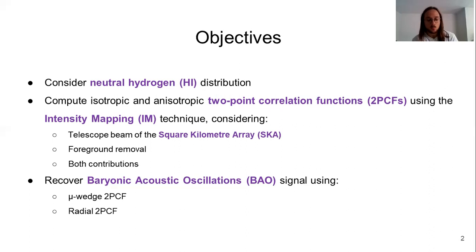And finally, the intensity mapping technique will be used in one of the surveys of SKA, which consists in observing the neutral hydrogen using low angular resolution pixels without detecting individual galaxies, but being able to map an enormous volume of the universe.